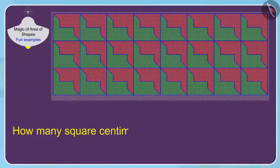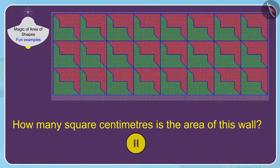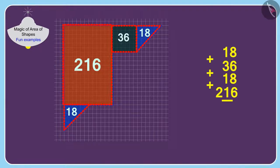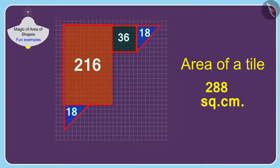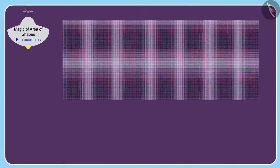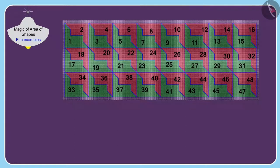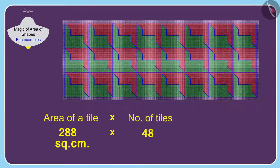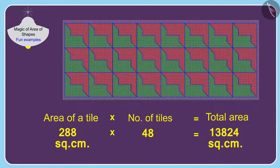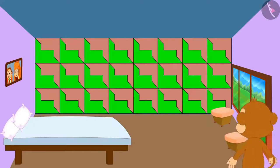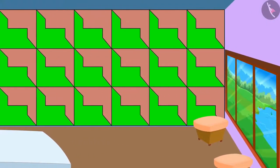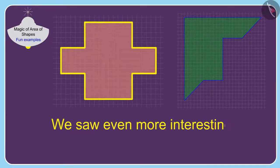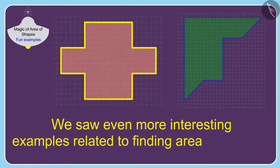Children, can you tell how many square centimeters is the area of this wall? If you want, you can stop the video and find the answer. First, we will find the area of a tile. The area of a tile is 288 square centimeters. Banno has used a total of 48 such tiles to decorate the wall. Therefore, the area of the wall will be 288 multiplied by 48, which is 13,824 square centimeters. When Baban saw the wall decorated by Banno, he was very happy and thanked her. Children, in this video we saw even more interesting examples related to finding areas of shapes.